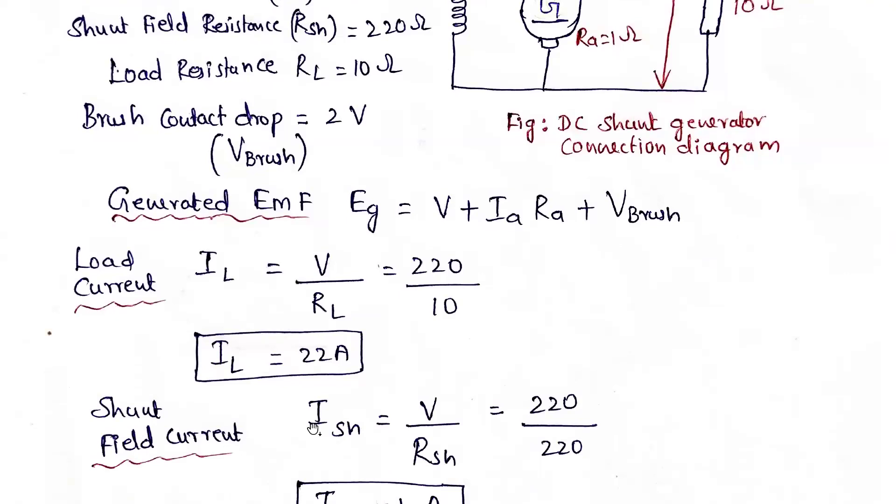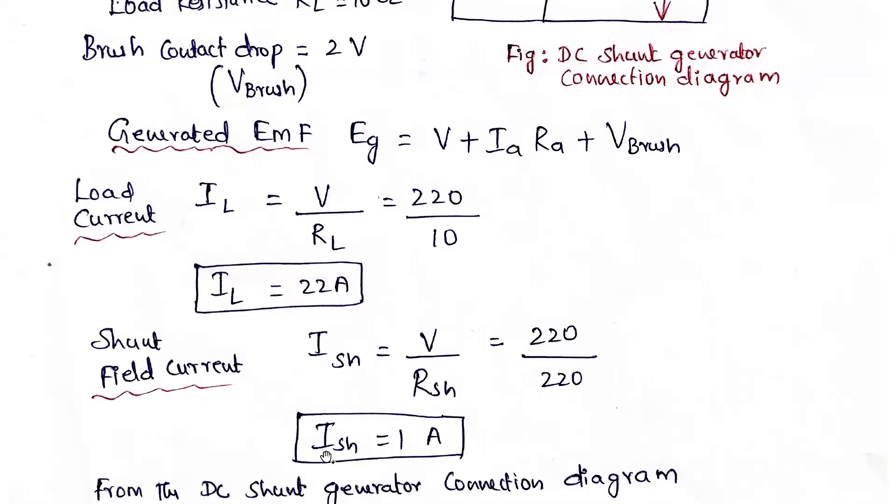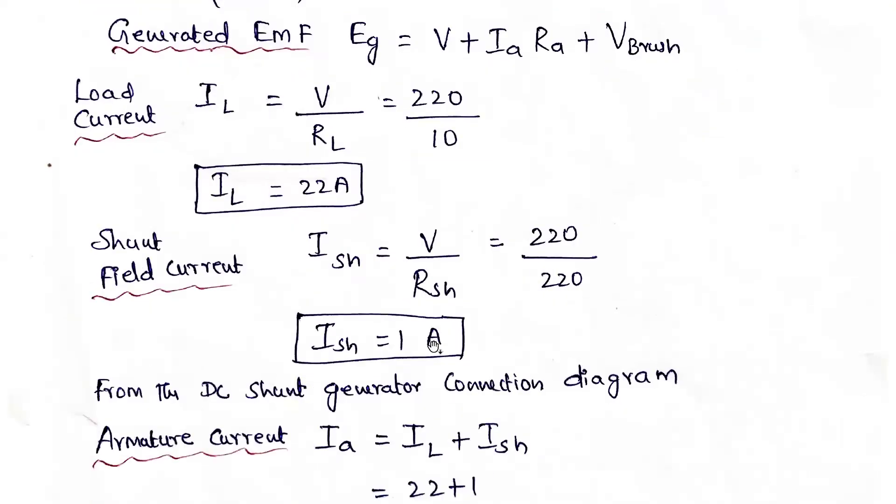Next is shunt field current. Ish equals V divided by Rsh. So V is 220 divided by Rsh which is also 220. So Ish equals 1 ampere.